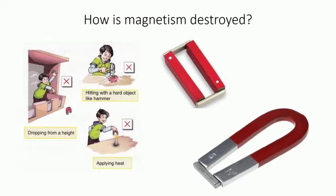How is magnetism destroyed? Magnetism gets destroyed when a magnet is heated, thrown, knocked about or broken into pieces.